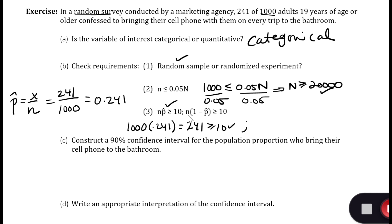Similarly, we have n, which is still 1000, times 1 minus p-hat, which is 0.241, and that has to be greater than or equal to 10. This actually equals 759, which is greater than or equal to 10. So that criteria is satisfied.